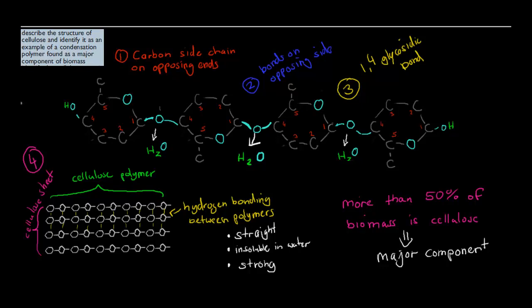Next is describe the structure of cellulose, so give some features of the structure. First we have the carbon side chain on the opposing end. We've got it here on the top of this monomer, the next one is on the bottom. On this one again top, and here bottom, so always on the opposite end. Also the bonds are on the opposing end. Here it points upwards, here it points downwards, here it points upwards. And we have a 1,4 glycosidic bond. So carbon 1 here and carbon 4 here, they bond together to form a 1,4 glycosidic bond.